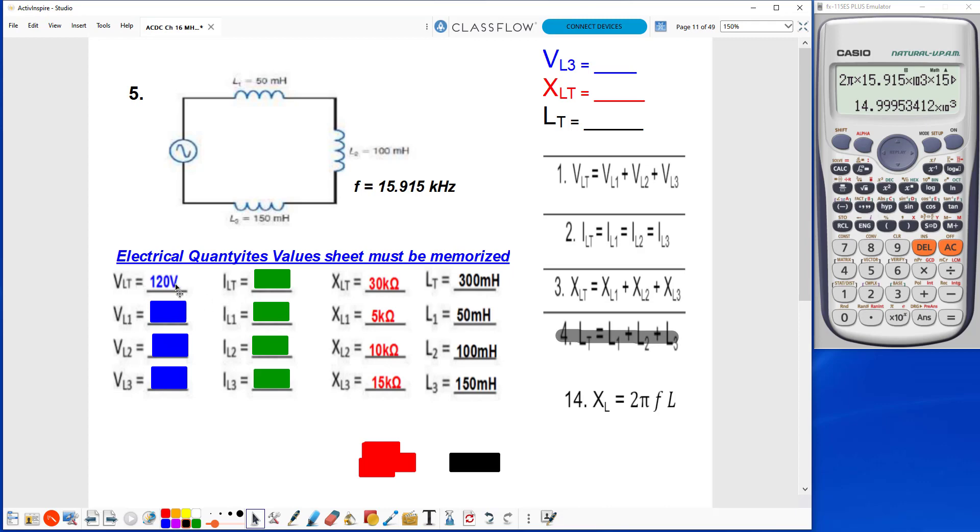Here using Ohm's Law, so it'll be 120 volts divided by 30k ohms, giving me a current of 4 milliamps. We can see here that formula number 2 tells us that current stays the same in a series circuit, so I'll fill all my currents in.